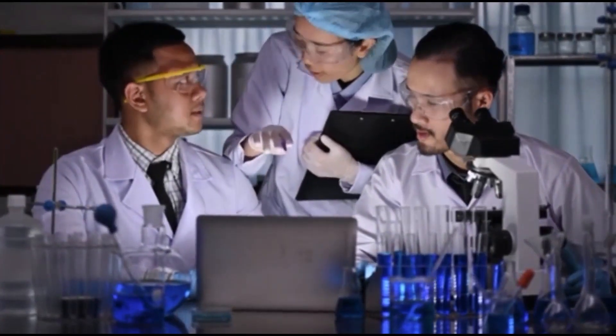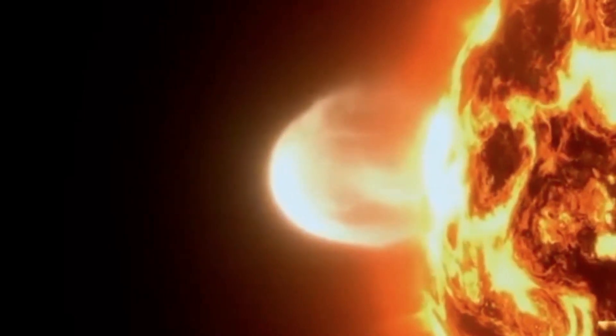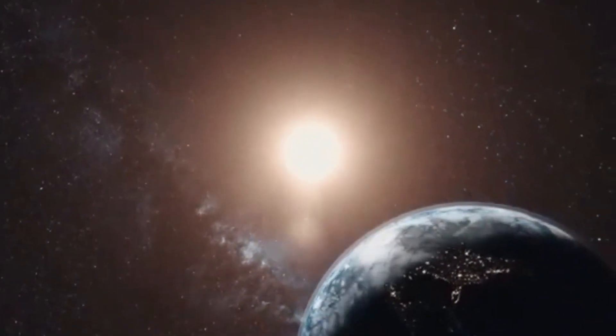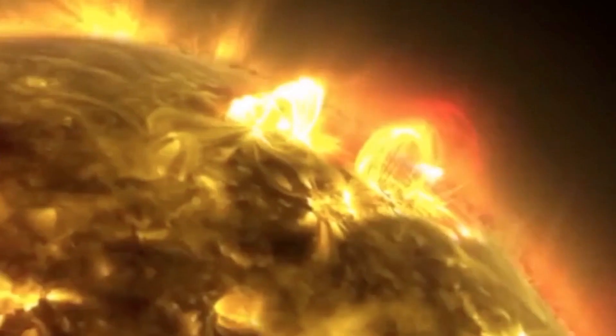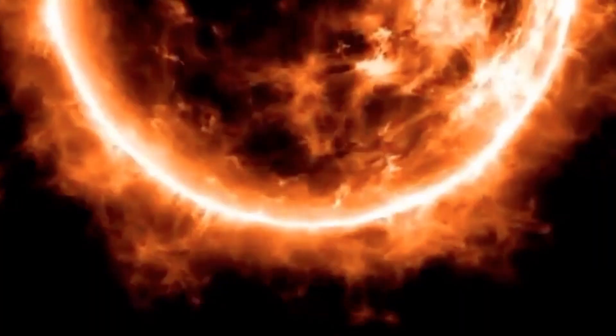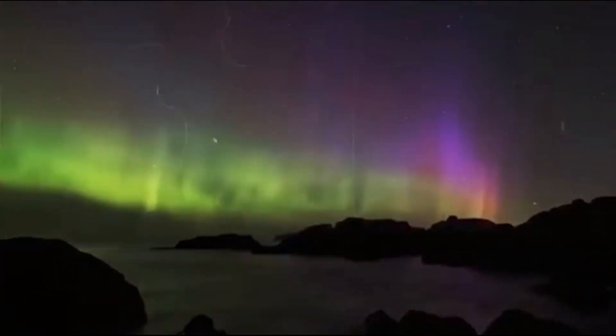It is forecasted that the solar maximum in 2025 will be significantly more powerful than the previous one. Although the exact degree of its intensity has not yet been determined, we are already observing X-class flares, which indicates an increase in solar activity as we approach the peak. Also, as the solar cycle reaches its maximum, an increase in the number of auroras can be expected.